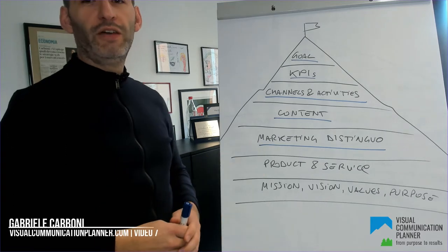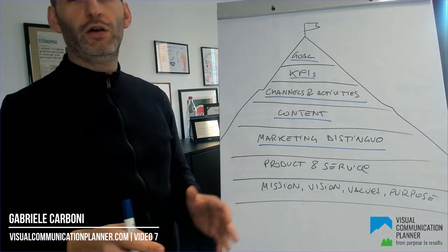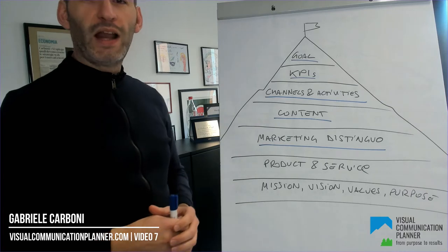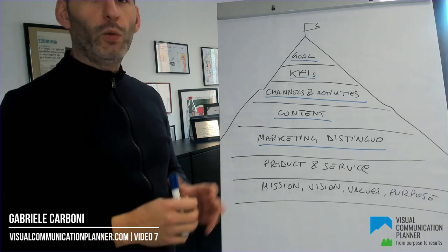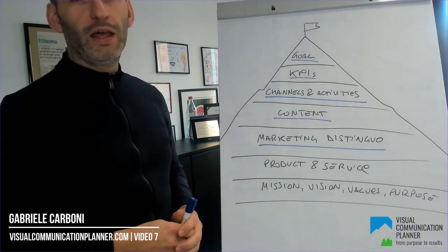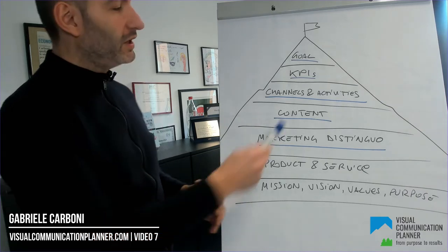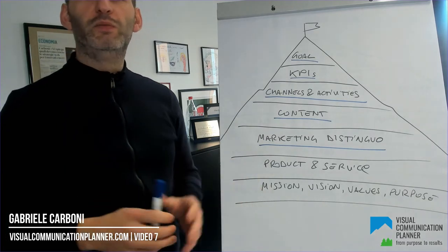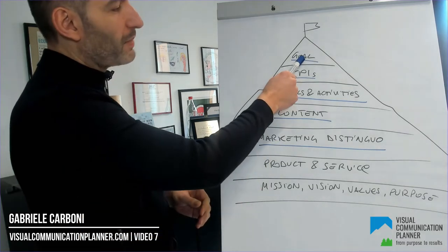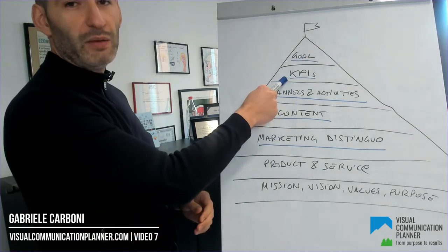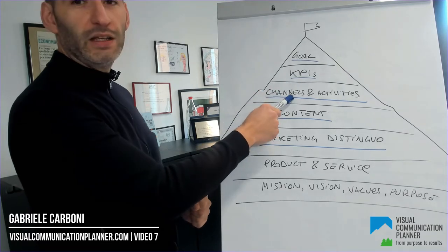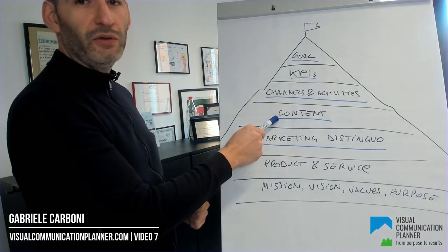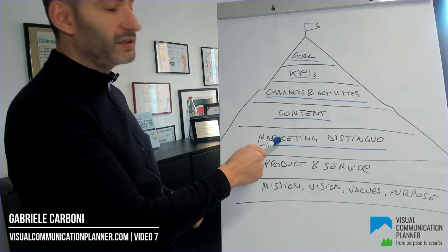Hello and welcome to the 7th training video by the Visual Communication Planner. As an expert climber would do, we looked at the top of our mountain and we are imagining our path backward. The summit of this peak is our goal. Going back we have KPIs, then channels and activities, before that content, and even before that the marketing distinguo.